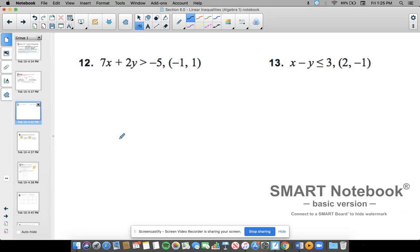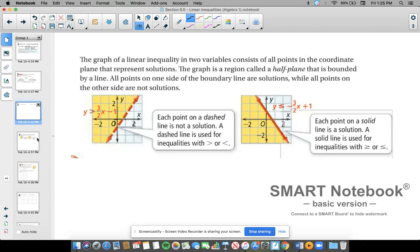Once you have that done, we are moving on and we're going to start pretty simply. So the first thing you need to know, you do not need to write down all this. Here's what you need to write down. If it is less than or greater than, it is a dashed line. It is a dashed line.